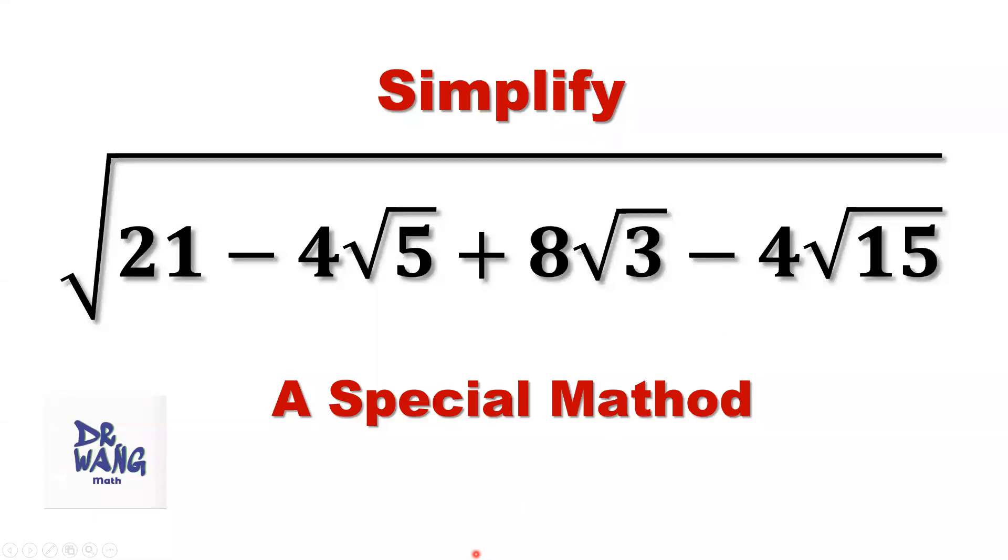Hello everyone, I'm Dr. Wen. Here is the question: Simplify square root of 21 minus 4 times square root of 5 plus 8 times square root of 3 minus 4 times square root of 15.